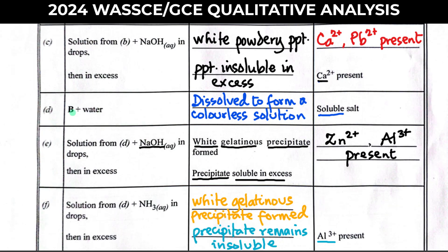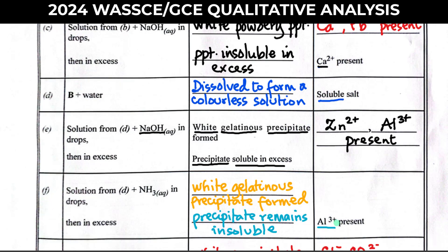The next test is on salt B. Salt B is added to water and we are told it is soluble, so the inference is that it is a soluble salt. To determine the color of the solution, check the cation present — it is aluminium (Al³⁺). Since all aluminium salts are white, in solution it would be colorless. If copper(II) were present, it would dissolve to form a blue solution.